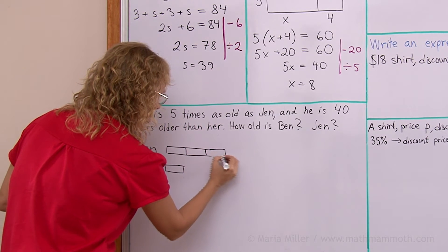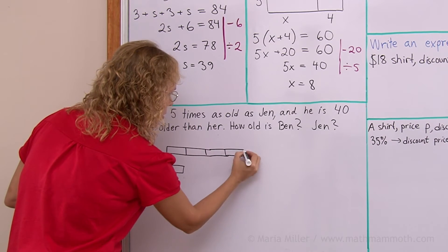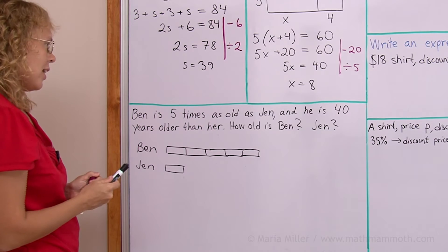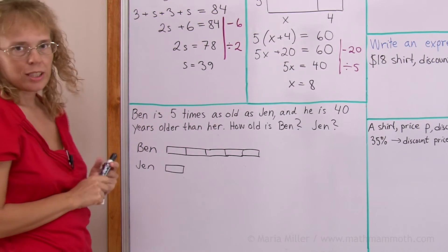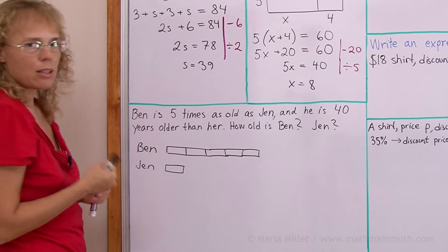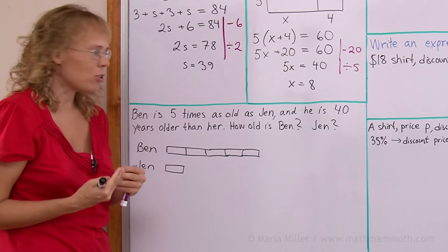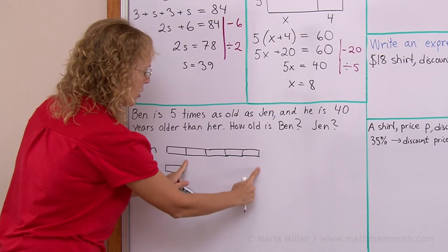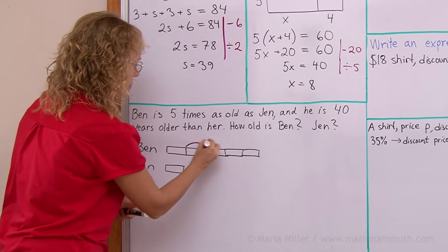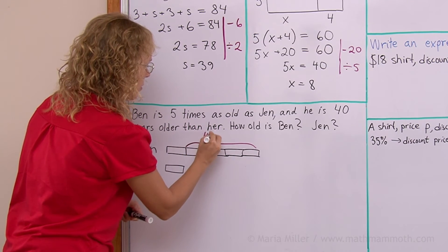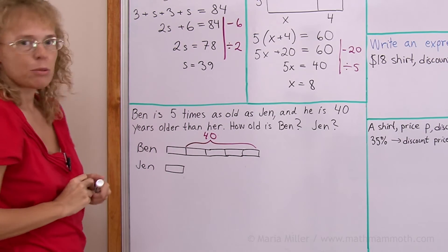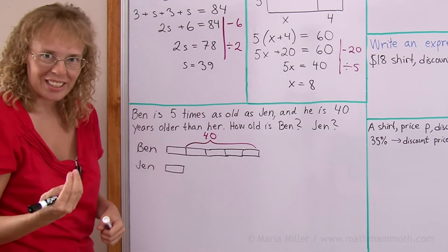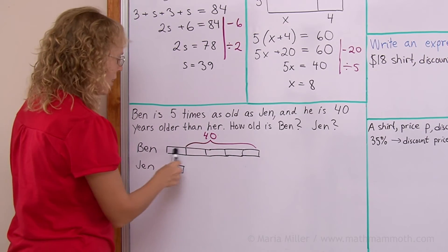Let's see. 1, 2, 3, 4 and 5. I see 5 blocks. And he is 40 years older than her. In other words, the difference of the ages is 40 years. The difference is also here. This is the difference in the ages. These 4 blocks is the difference. This here is 40. Now, of course, we can easily solve it that 1 block here must equal 10 years. And so Jen is 10 and Ben is 50.